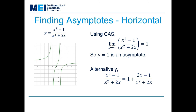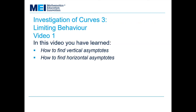Alternatively, we could have rearranged it: rewriting x squared minus 1 over x squared plus 2x as 1 plus (2x minus 1) over x squared plus 2x, and showing that this tends to 1 as x tends to infinity. In this video, you've learned how to find vertical asymptotes and how to find horizontal asymptotes.